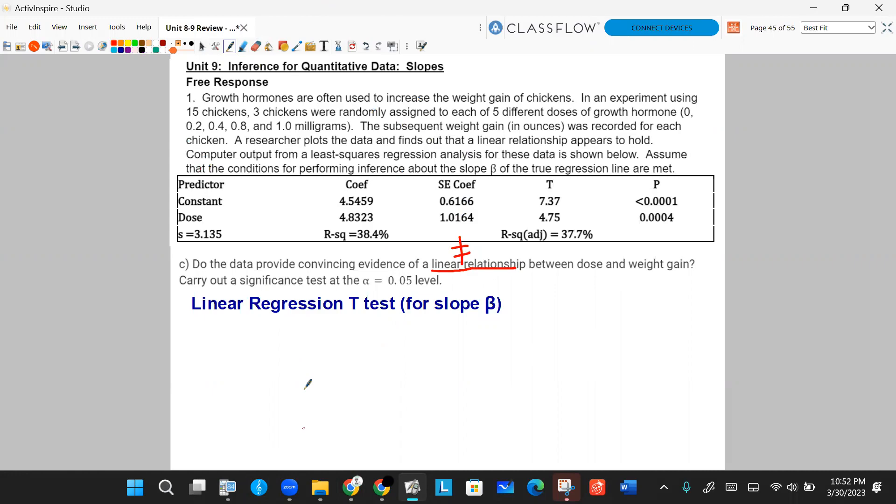Your hypotheses are going to look like this. You'd say the null hypothesis is there is no linear relationship. In other words, the population slope is zero. The alternative would be there is a linear relationship. In other words, the population slope is not equal to zero. In other words, there's some slope, there's evidence that there is a linear relationship between them. We're going to use an alpha level of 5%. And it says so right in the problem. So it's not super necessary to repeat that if you don't want to. So let's go ahead and check our conditions. My favorite line, assume that the conditions for performing inference about the slope β of the true regression line are met. Well, guess what? For our plan part, all we got to do is restate that.